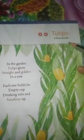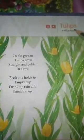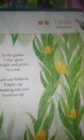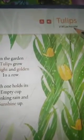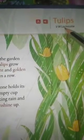Today we will read a poem. Today we have a poem, and the name of the poem is Tulips — T-U-L-I-P-S, tulips. It is the name of a flower. And the name of the poet is V.W. Lachicotte — L-A-C-H-I-C-O-T-T-E.